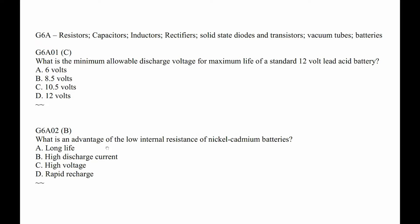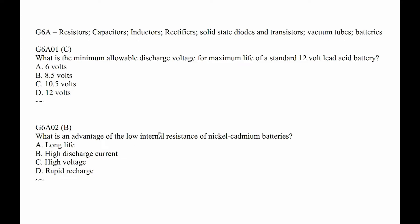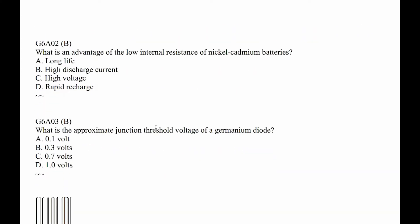G6A02. What is an advantage of the low internal resistance of a nickel cadmium NICAD battery? They can deliver a lot of current because they don't have much resistance, so it's B — high discharge current. G6A03. What is the approximate junction threshold voltage of a germanium diode? It's low — about a third of a volt. I'm currently using them in a field strength meter. Third of a volt.